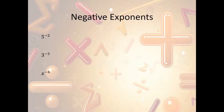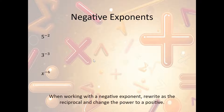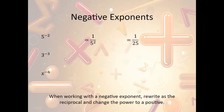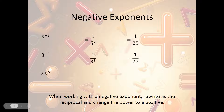Now let's take a look at negative exponents. A negative exponent looks like 5 to the negative second power. The rule is: when working with a negative exponent, rewrite it as the reciprocal and change the power to a positive. So 5 to the negative second becomes 1 over 5², which is 1 over 25. For 3 to the negative third: that becomes 1 over 3³, and 3³ is 27, so it's 1 over 27. And x to the negative sixth becomes 1 over x⁶.